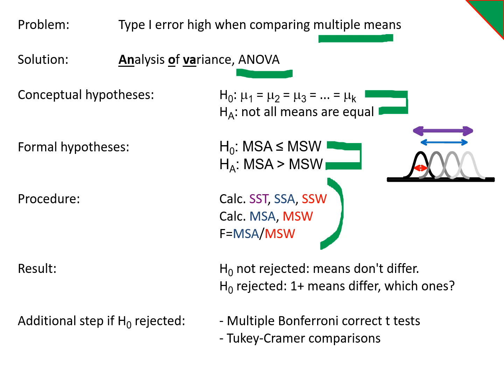We either accept the null hypothesis and the means don't appear to differ, or we reject and one or more are different. And then we figure out which ones are different with either Bonferroni-corrected t-tests or Tukey-Kramer comparison intervals.